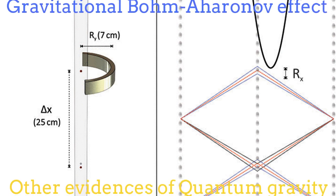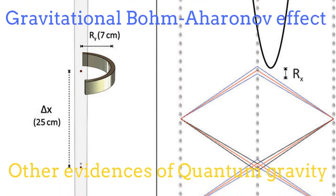Finally, another possibility for investigating evidences of quantum gravity without reaching the Planck length is by looking at indirect evidences such as the Gravitational Bond-Aharonov effect, which has been claimed to be observed in gravity recently. We will explain more about this effect in future episodes.